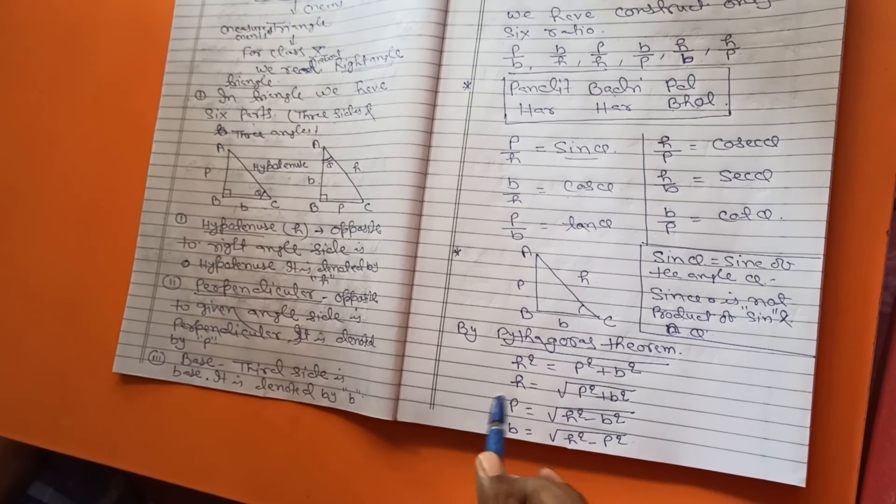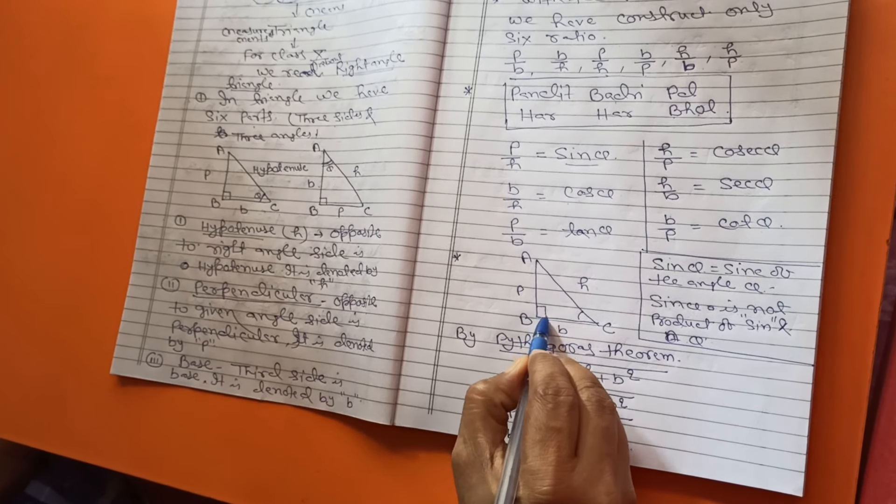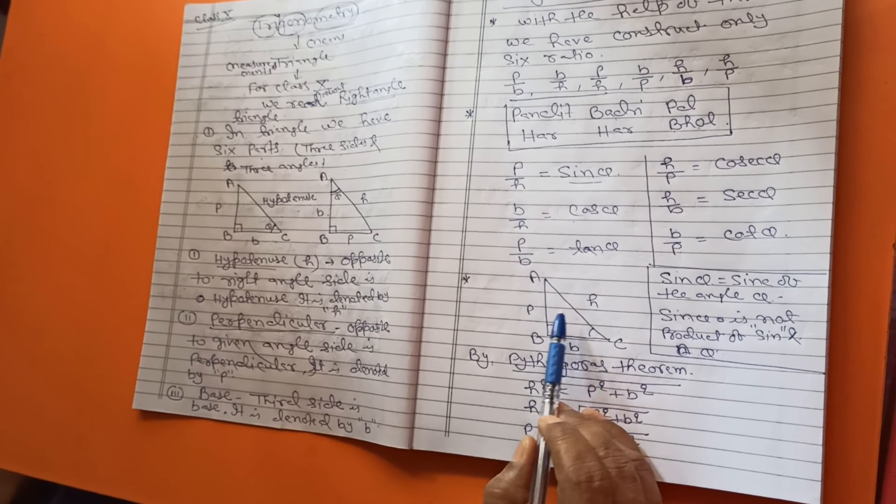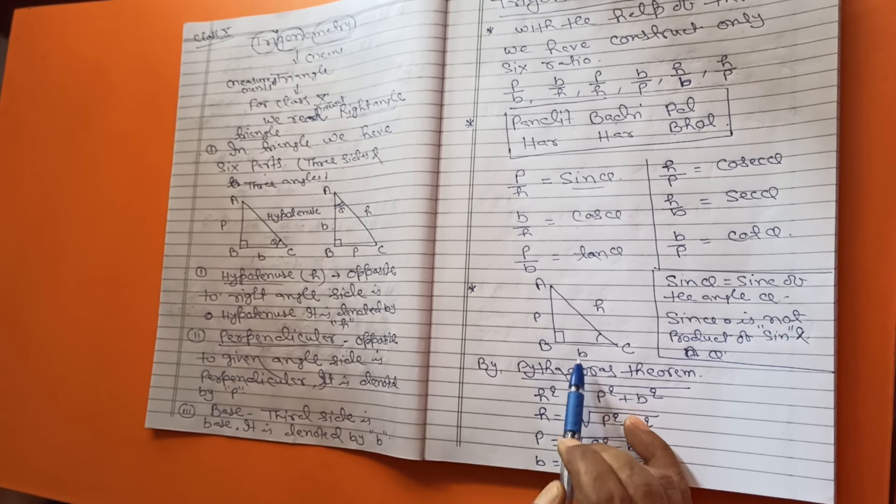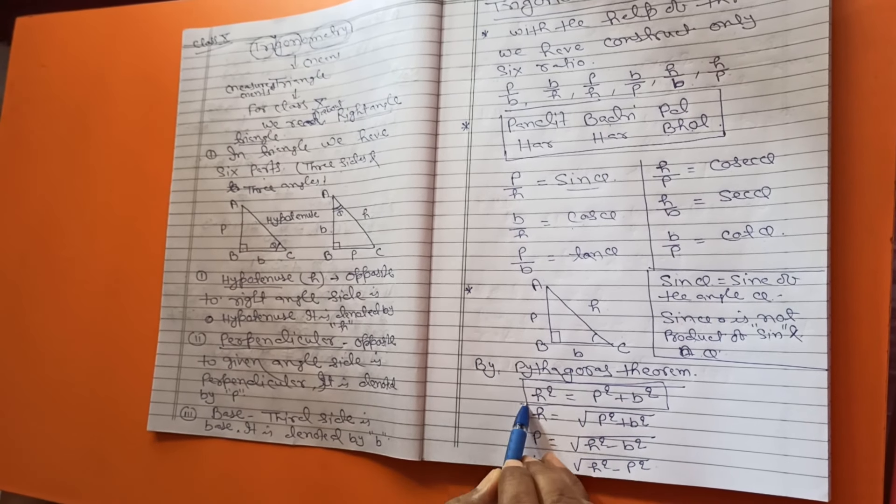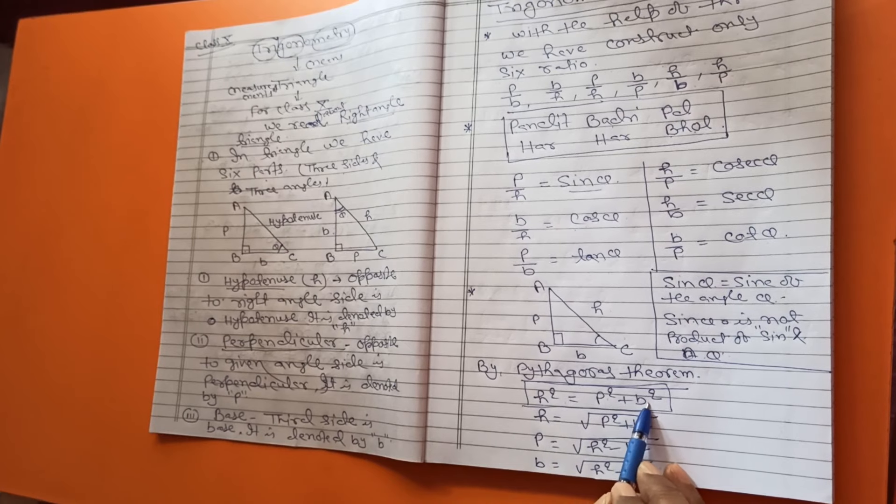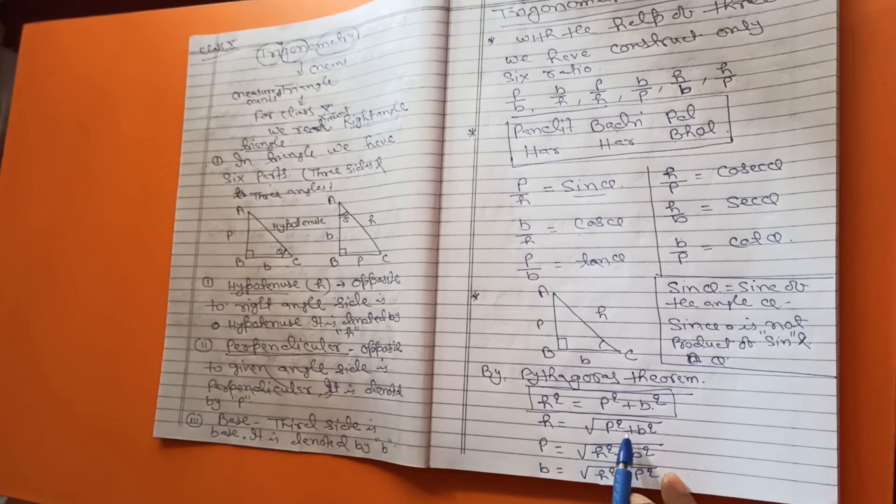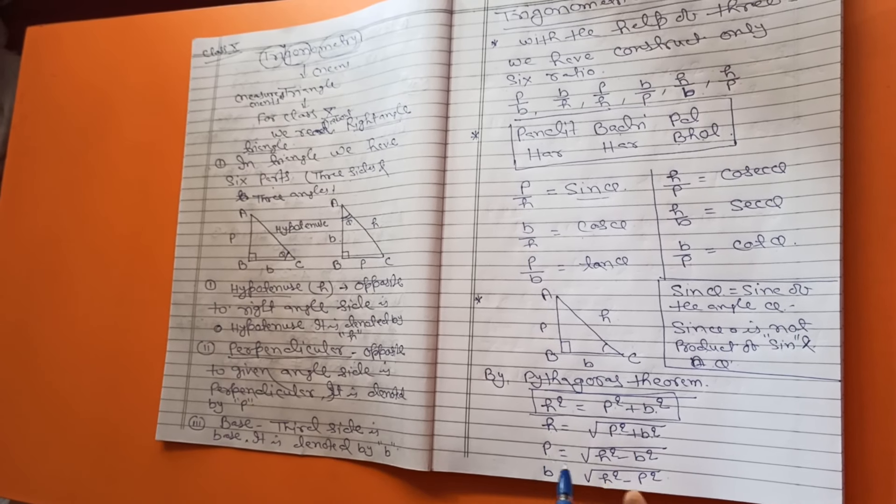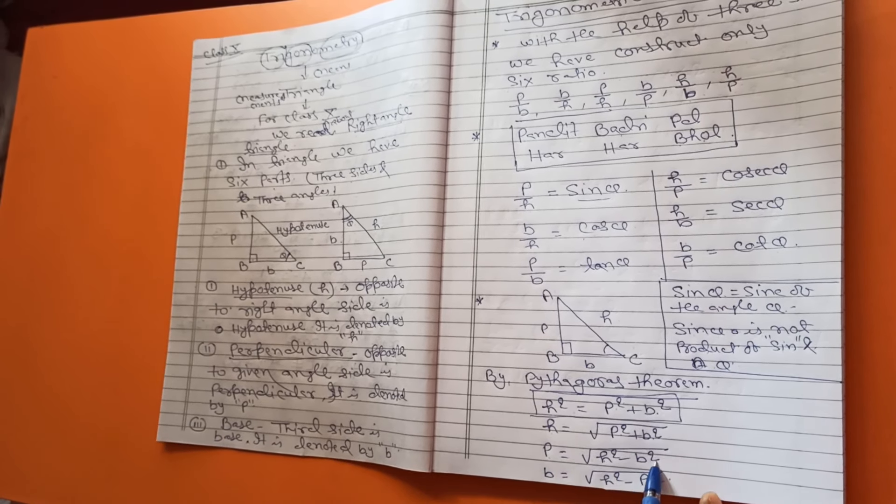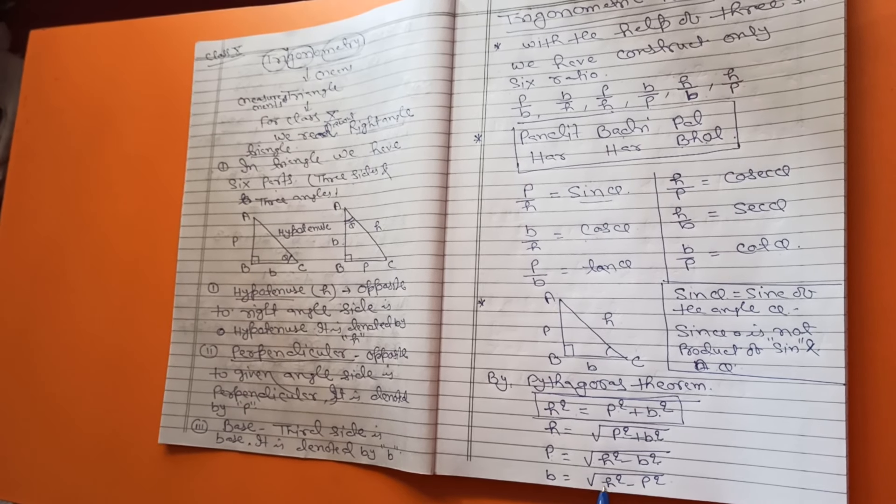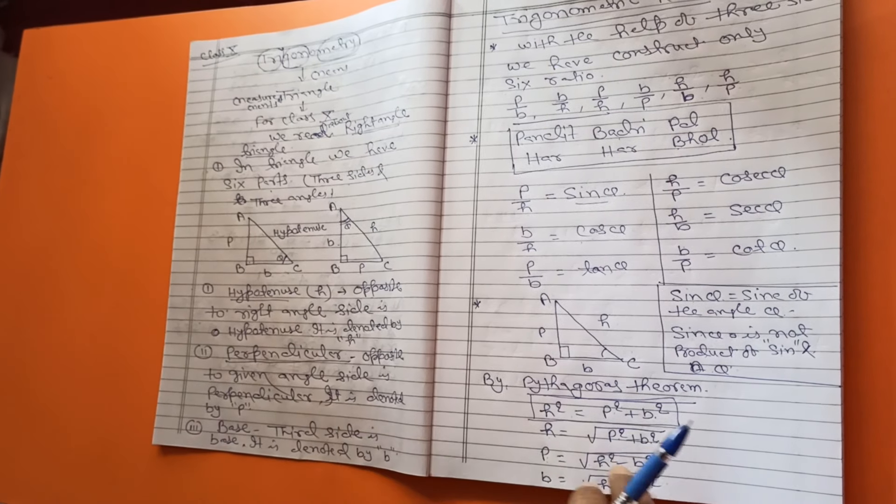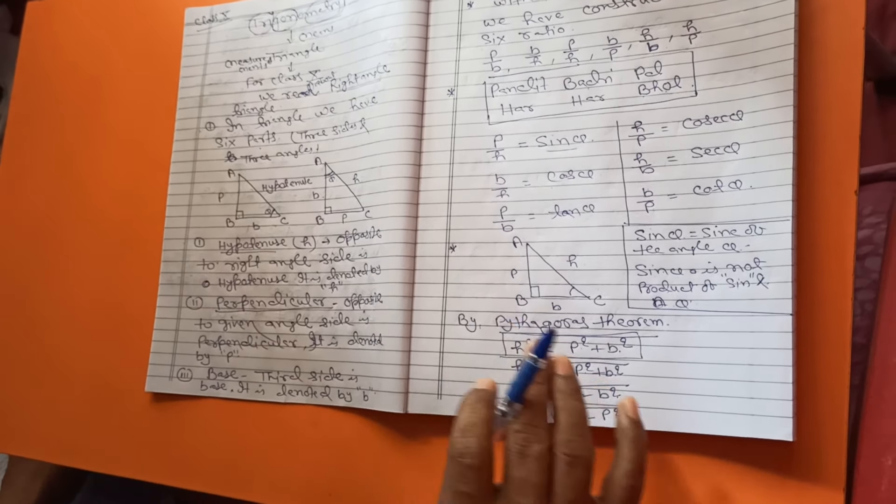Now, second step. You know, this is right angle triangle. So, you know that by Pythagoras theorem, H square equal to P square plus B square. This is the formula. Now, you find H. H means under root P square plus B square. If you find P, under root H square minus P square. If you find B, under root H square minus B square. With the help of this concept, you solve the exercise.